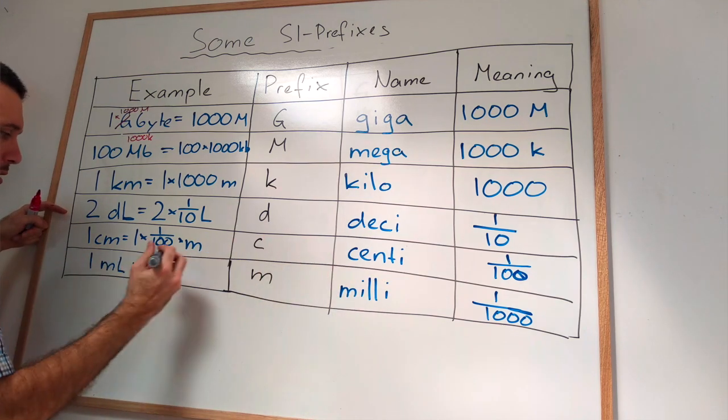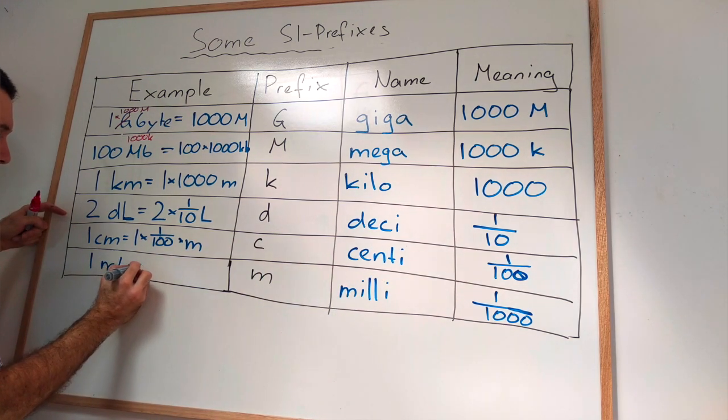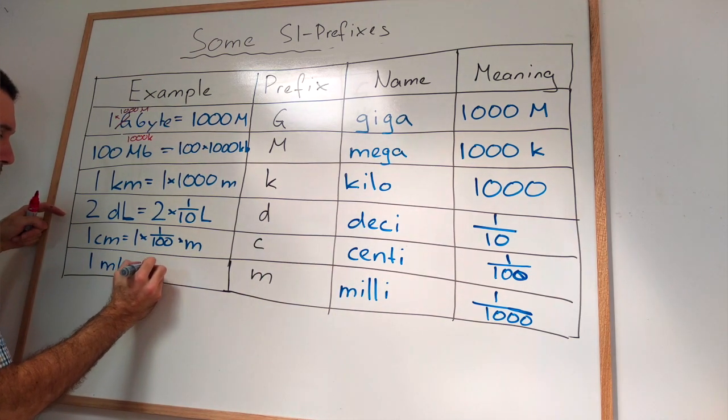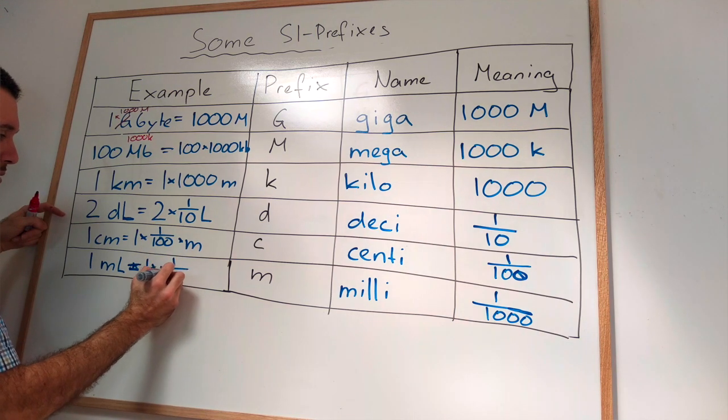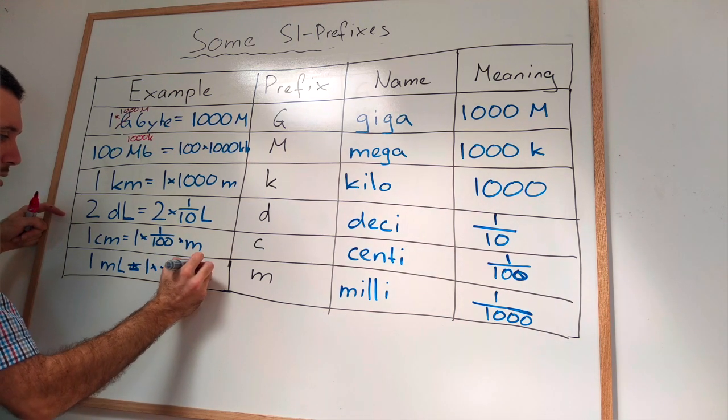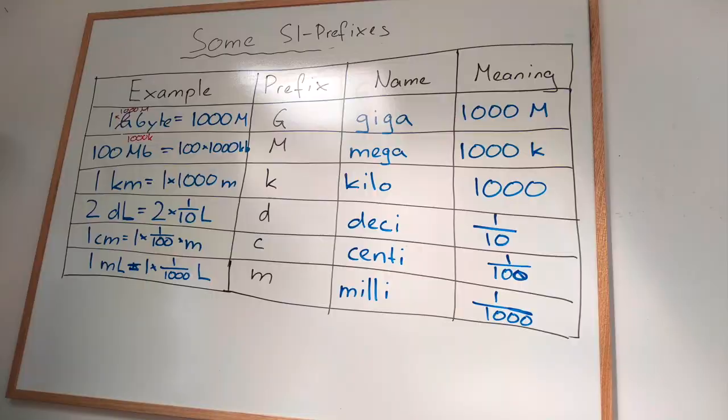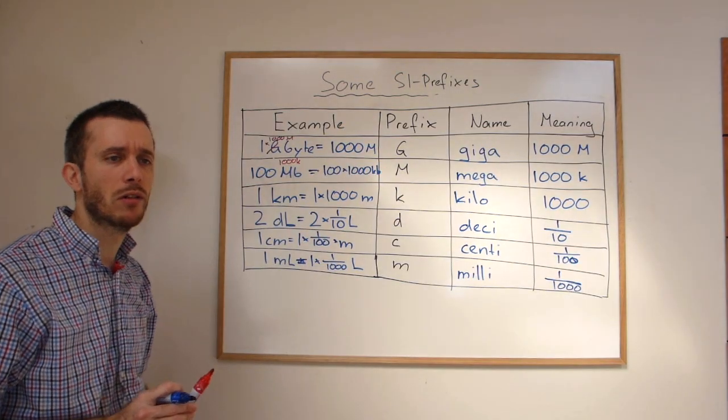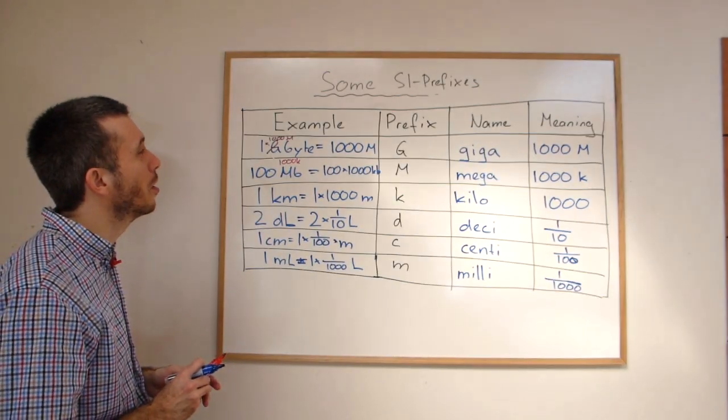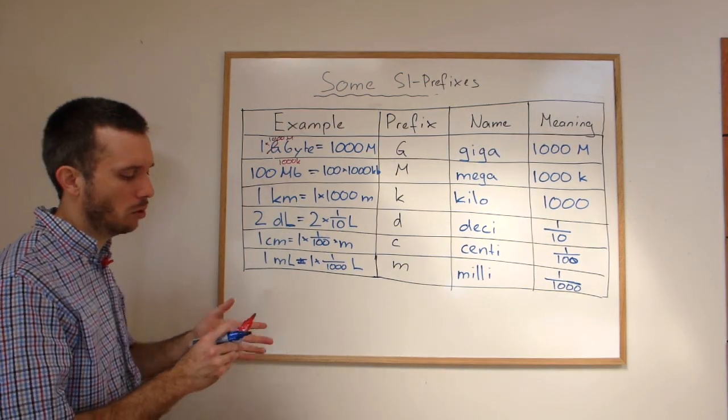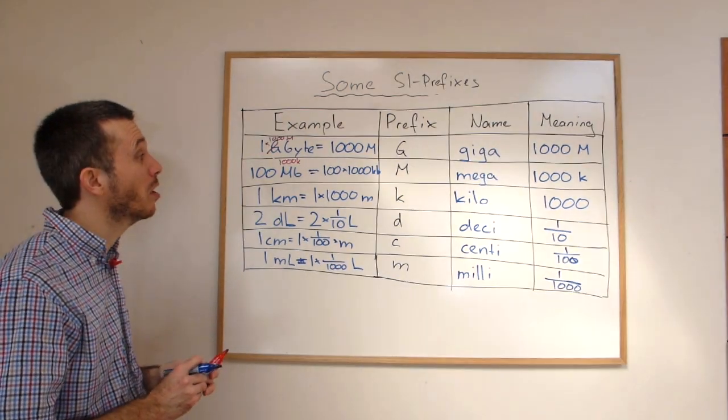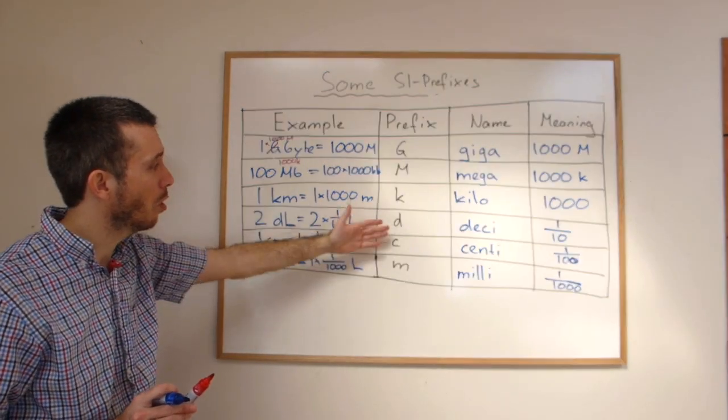Well, the M stands for one over 1000. So one milliliter is equal to one times one over 1000 liters. Now, there are many more. Just look them up on the internet and put them on a cheat sheet somewhere. Or on the long run, you might want to memorize them. These are probably the most common ones. Like the kilo, the deci, the centi, and the milli.